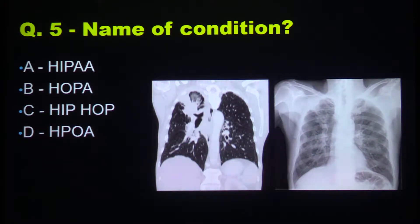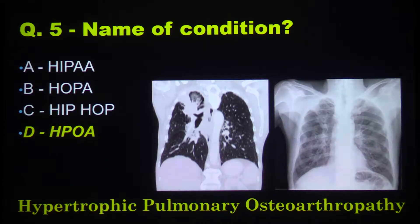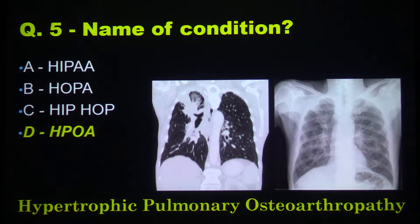The name of the condition — probably not hip-hop — it's hypertrophic pulmonary osteoarthropathy, which explains the periosteal reactions that we see.